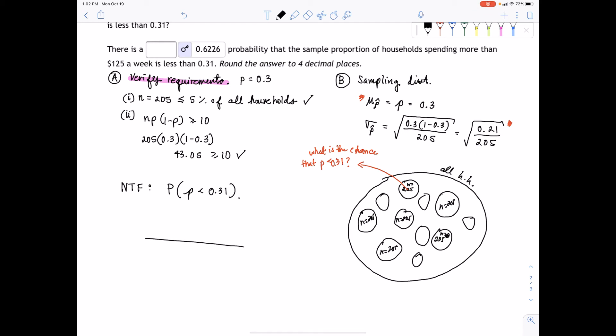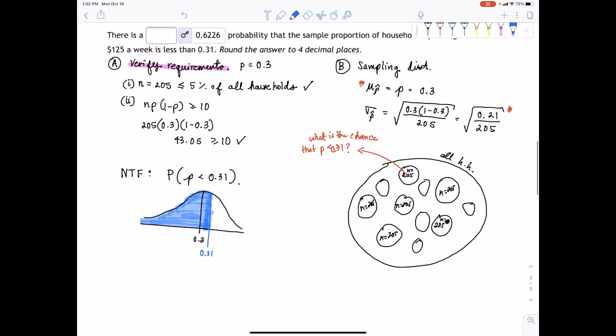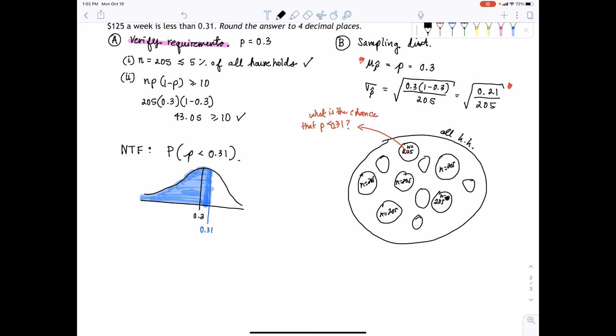Let me draw a picture. Here's P, which is 0.3. And 0.31 should be just on the right of it. We're looking for less, so we will definitely shade to the left. We can see it past the 50% mark. So I expect this probability to be more than 50%.